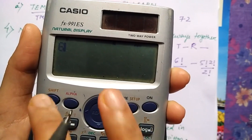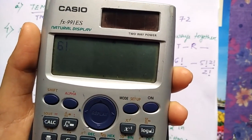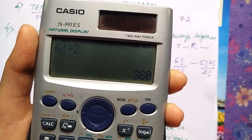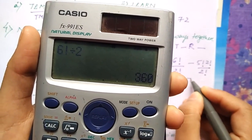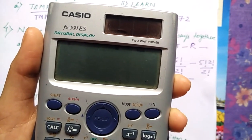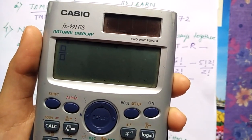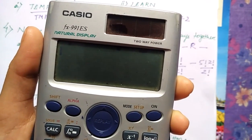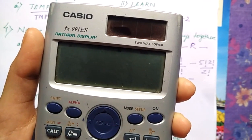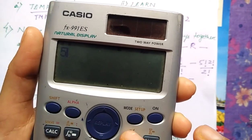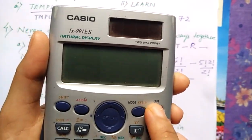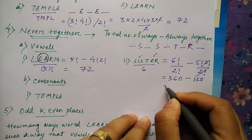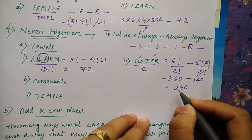That is six factorial divided by two. How much it is? Three sixty minus five factorial. See five factorial into two factorial divided by two factorial. So it means you are cancelling out two. So five factorial is one twenty. So this is cancel out. So this is one twenty. So how much you are getting? Two forty is the answer.